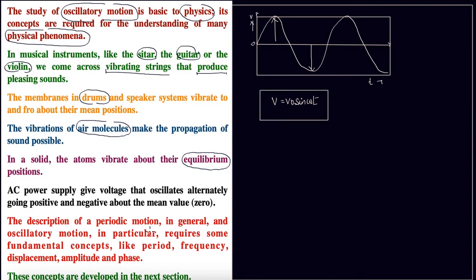The description of periodic motion, and in general, oscillatory motion in particular - we want to talk about oscillatory motion. To understand this, we need to learn certain things: what is period, what is frequency, what is displacement, amplitude, and phase. When we study these things separately, we will understand the concept of oscillatory motion very well. This is all about the introduction part, and we will discuss all these things in detail in the coming lectures. Thank you.